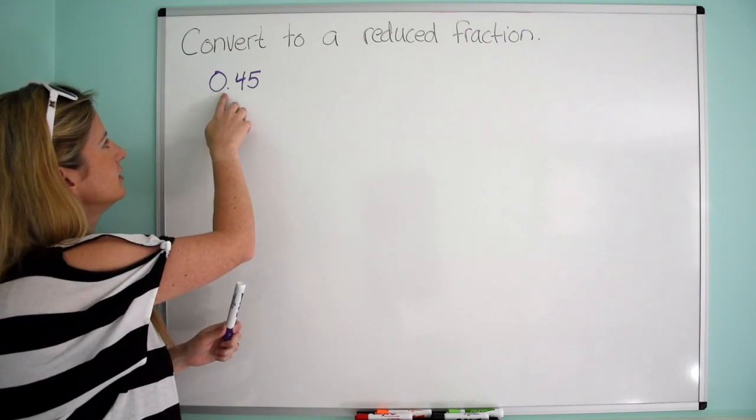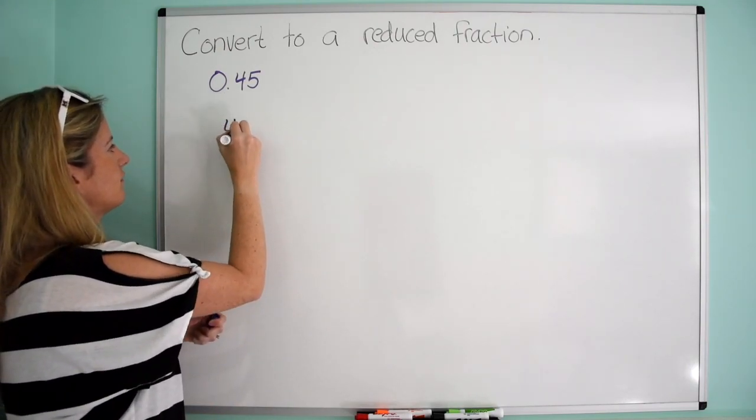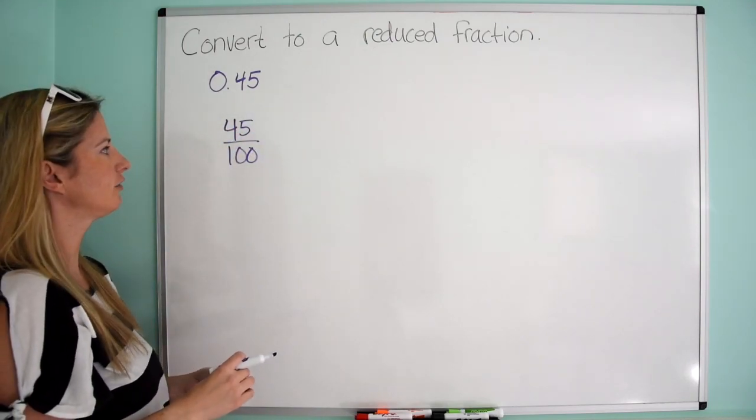So what we can do here is we can just write it as 45 hundredths. Because that's what it is, 45 over 100.